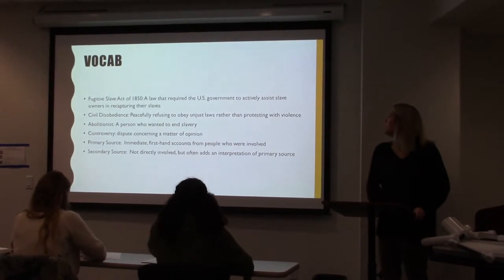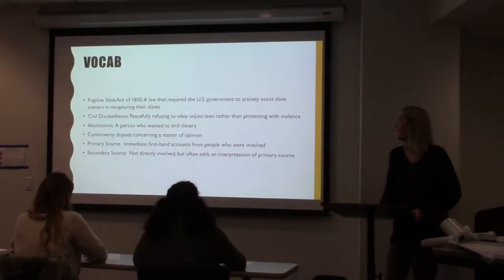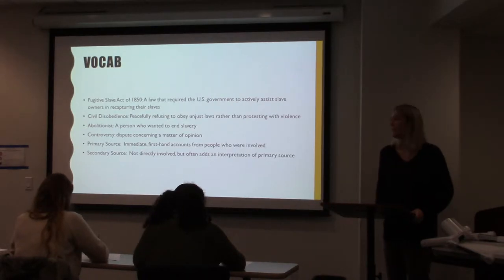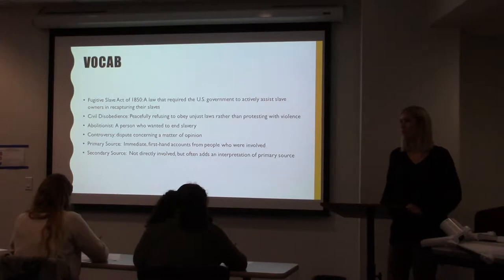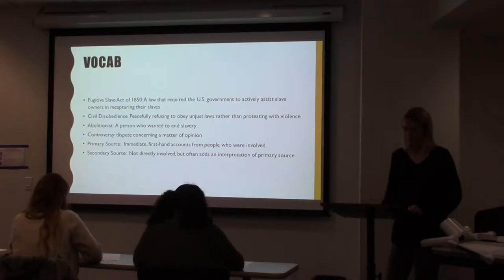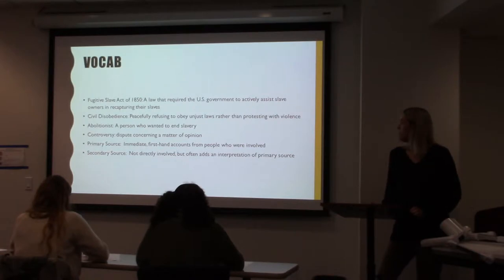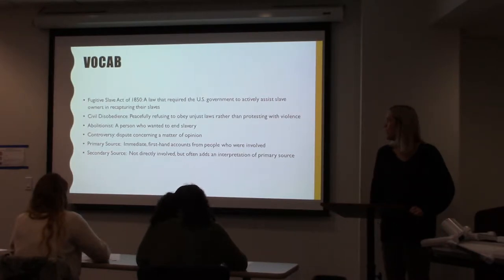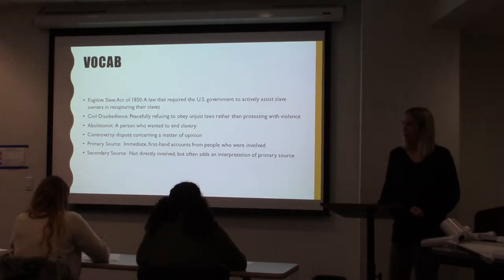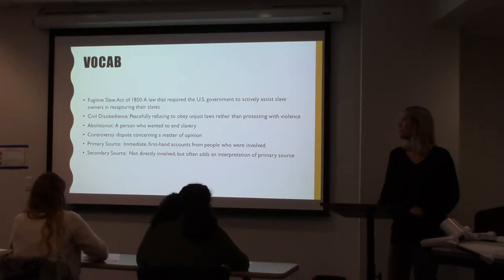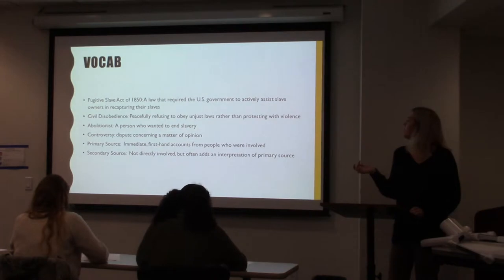First thing: vocab. Our first vocab was the Fugitive Slave Act of 1850, defined as a law that required the U.S. government to actively assist slave owners in capturing their slaves. Before this law, if a slave escaped, sympathetic people were allowed to help them to freedom. But once this law was passed, it made it illegal for people to help slaves escape — now if a person was caught, they were obligated to return them to the master. The next vocab word is civil disobedience, defined as peacefully refusing to obey unjust laws rather than protesting with violence. We're going to see some of that in Harriet Beecher Stowe's purpose for her book — she wanted to encourage others to help runaway slaves by practicing civil disobedience, because she felt the Fugitive Slave Act of 1850 was unjust.